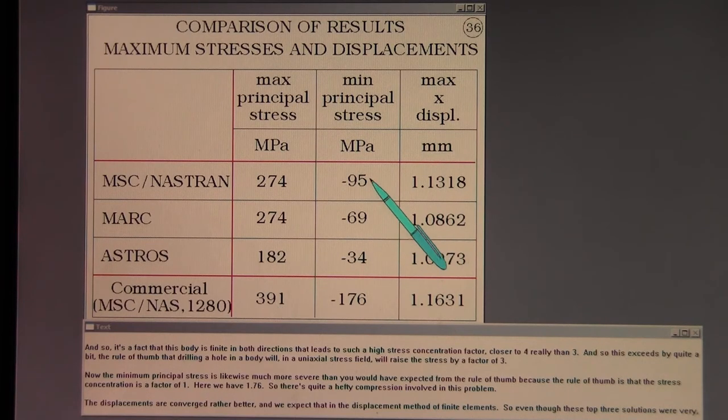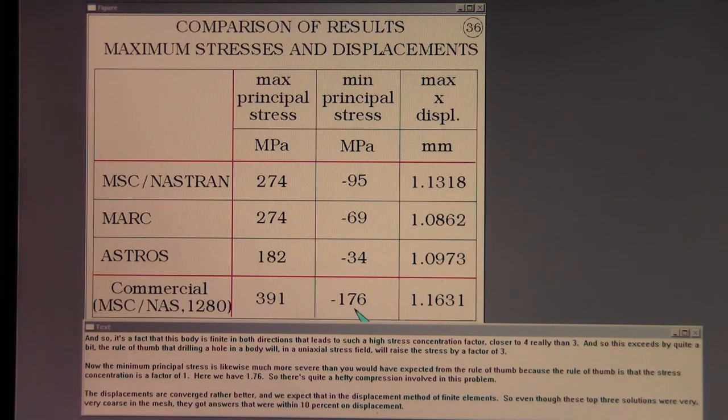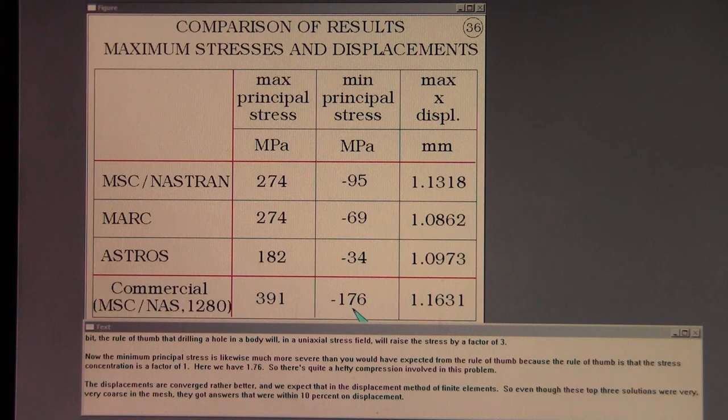Now the minimum principal stress is likewise much more severe than you would have expected from the rule of thumb. Because the rule of thumb is that the stress concentration is a factor of 1. Here we have 1.76. So there's quite a hefty compression involved in this problem.